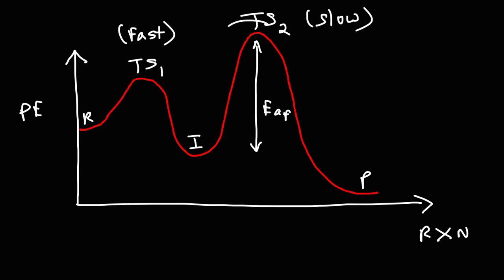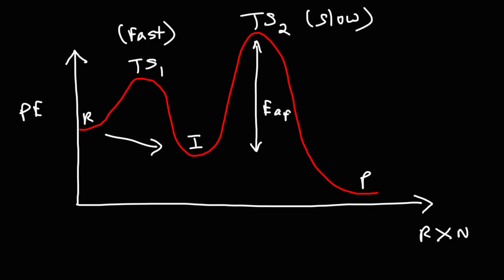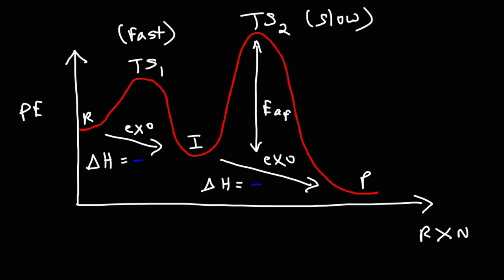Whenever you see this big hill, that's the slow reaction — it's going to take a lot of energy to go up that hill. For the first step, going from reactants to intermediate, notice that we're going down the potential energy diagram, so that's an exothermic process — delta H is negative. Going from the intermediate to the products, we're also going down the potential energy diagram, so that's another exothermic step. Overall, this reaction is exothermic — energy is being released.